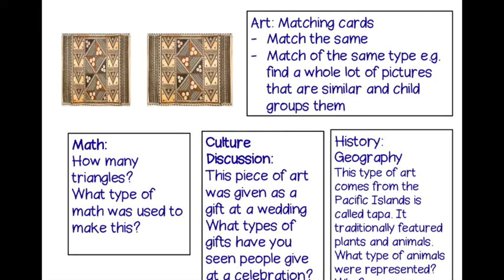History and geography can also be linked to this. Tapa cloth traditionally featured plants and animals — what type of animals were represented and why? This type of artwork would represent sea animals, being from the Pacific Islands, and the flowers of that country. You could model the thinking: would there be pictures of zebras? Why or why not? Are there pictures of elephants? This also links to zoology — where particular animals come from and the importance of the natural environment to the culture.